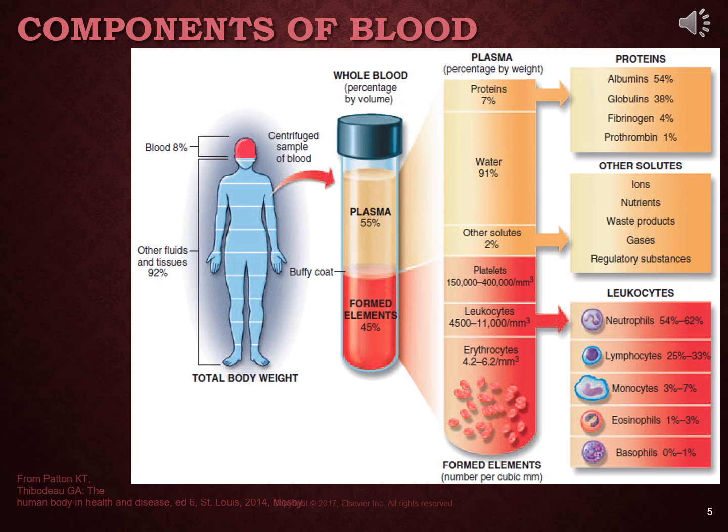Plasma without the clotting proteins is called serum. When you get fresh frozen plasma, or FFP, it has clotting factors in it, which is really important for people who have problems with clotting. Looking at whole blood spun down in a centrifuge, the plasma is 55% of the volume and the formed elements or cells are 45%.